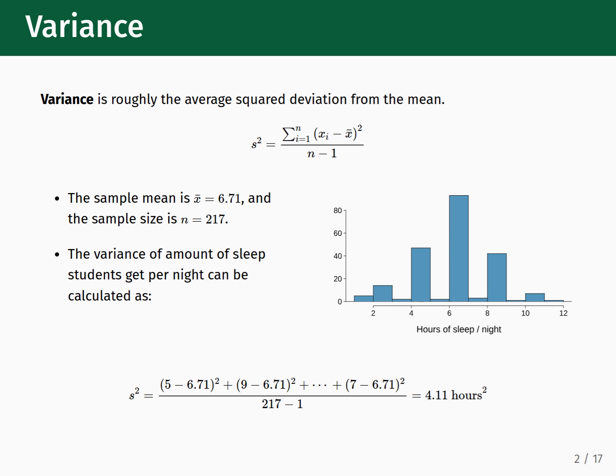When we first learned how to describe the shape of data distributions, we focused on qualitative descriptions such as the center, modality, skewness, and outliers. Another important component of a distribution is its width or spread, which captures the statistical variation of a sample. Knowing how to quantify and interpret this variation is important as we begin comparing different data distributions to one another.